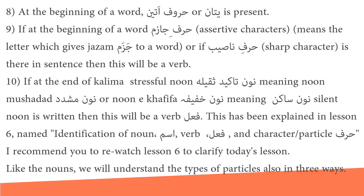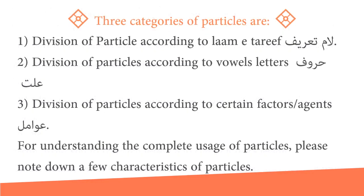This has been explained in lesson 6 — identification of noun, verb, and particle. I recommend you rewatch lesson 6 to clarify today's lesson. Like the nouns, we will understand the types of particles in three ways. There are three categories: (1) division of particle according to lam ta'rif — the introductory al (aliflam); (2) division according to vowel letters — huruf illa; and (3) division according to certain factors or agents — 'awamil.